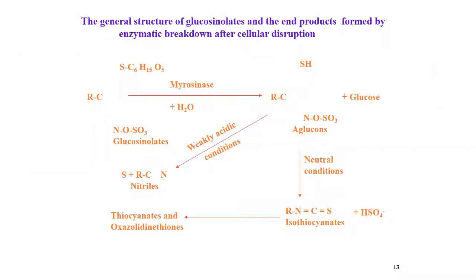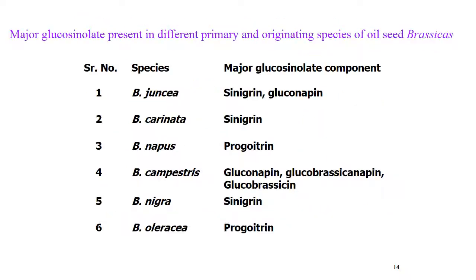The general structure of glucosinolates and end products formed by enzymatic breakdown after cellular disruption is shown, along with the biosynthetic pathway. Coming to major glucosinolates in different Brassica species: in Brassica juncea — sinigrin and glucosinopin are present. In Brassica carinata — sinigrin. In Brassica napus — progoitrin. In Brassica campestris — gluconapin. In Brassica nigra — sinigrin. In Brassica oleracea — progoitrin.